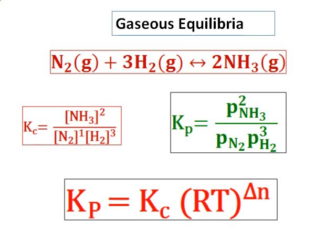Note that ΔN can be negative. For the nitrogen plus hydrogen giving you ammonia reaction, there are 2 moles on the product side and 4 moles on the reactant side — 1 nitrogen plus 3 hydrogen equals 4 moles of reactants. Therefore ΔN equals 2 minus 4, which is negative 2. So it is possible for ΔN to be negative. In problems, you may be asked to convert Kp to Kc — substitute all values into the formula and you will be able to get one value from the other.